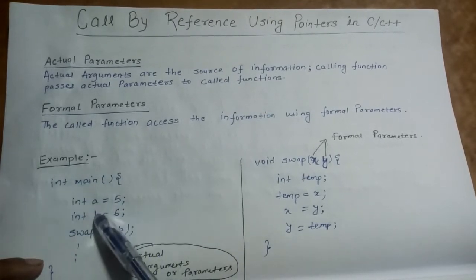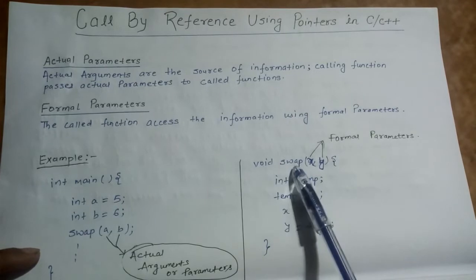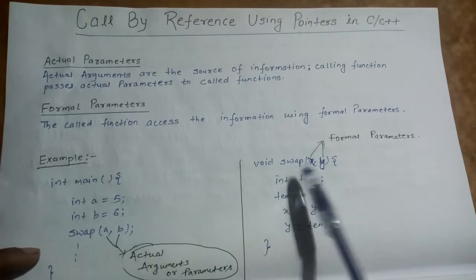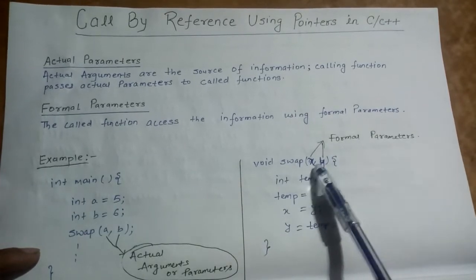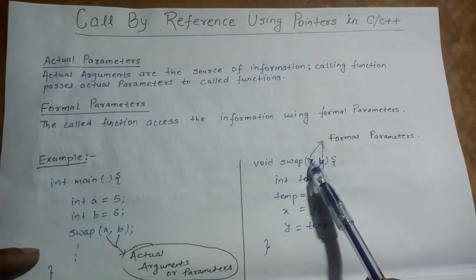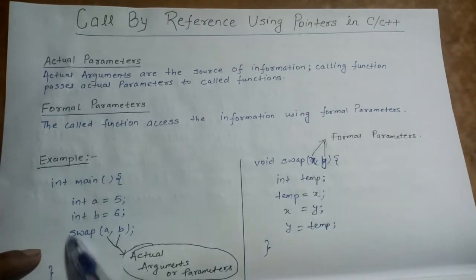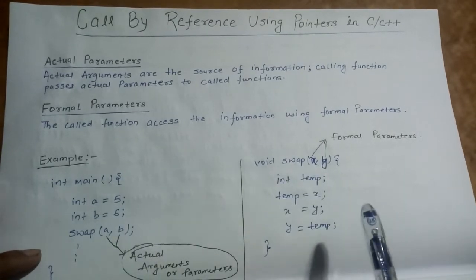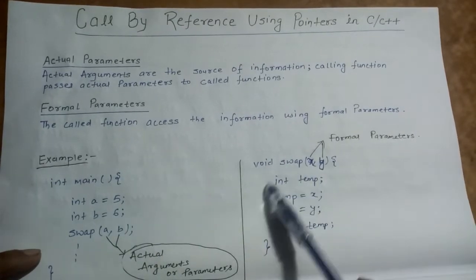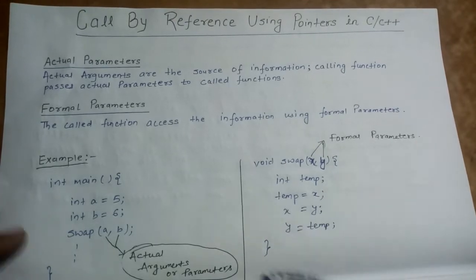So A and B are the actual parameters. And in the swap function — void swap(x, y) — X and Y are called the formal parameters. These formal parameters are actually used to access the information supplied by the calling function. Inside this function, we have the swap logic which we will talk about later.